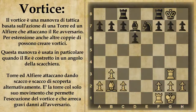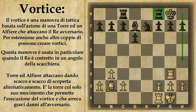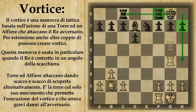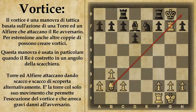Vediamo invece ora cosa succede se il nero ha addirittura un pedone in più: questo pedone è il pedone h7. Le cose si complicano ancora di più per il nero, perché questo pedone non permetterà al re nero di sfuggire neanche su questa colonna. Quindi è la torre che impedisce di sfuggire da un lato e il pedone che impedisce di sfuggire dall'altro. Qui addirittura il bianco ha un matto in 5, e ovviamente al solito comincia con torre per pedone per aprire la diagonale e far cominciare il vortice.